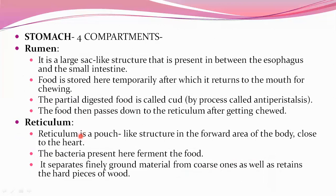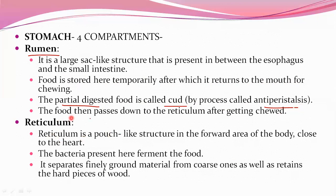The stomach has four compartments: rumen, reticulum, omasum, and abomasum, each with a unique function. The rumen is a large sac-like structure present between the esophagus and small intestine. Food is stored temporarily in the rumen, after which it returns to the mouth for re-chewing. The partially digested food — called cud — reaches the mouth by the process called anti-peristalsis. The food then, after chewing, passes to the reticulum.